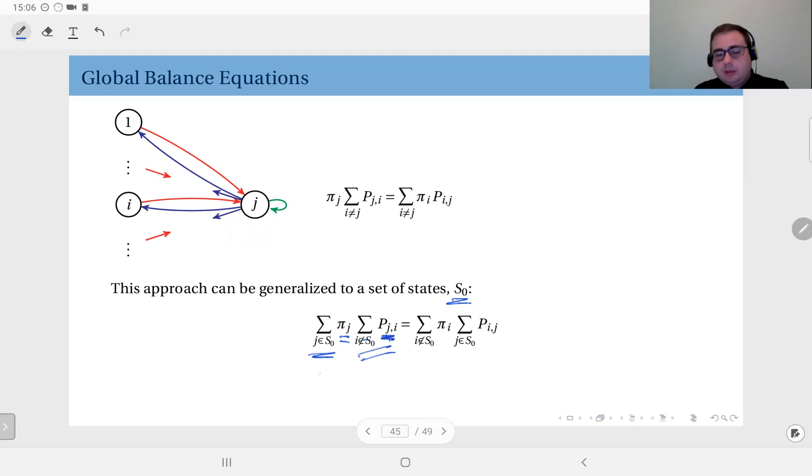On the right hand side I have the probability flux coming into the set of states S₀. The probability of each state that is outside S₀ multiplied by any transition probabilities from i into some j where j is in S₀.